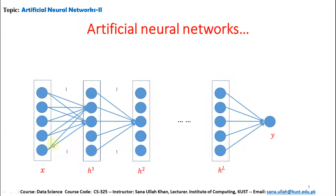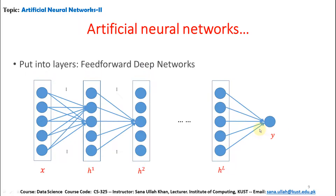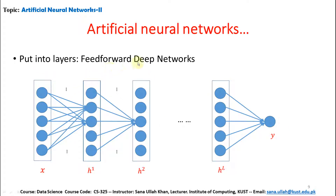In the network, X inputs are fed into hidden layer 1, then to hidden layer 2, then to hidden layer L, and then the output is generated. This represents a feedforward network. The X values are combined and transferred to hidden layer 1 where some operation is performed, then transferred to hidden layer 2, then to hidden layer L, and finally combined using an activation function to create an output.